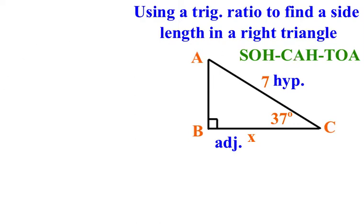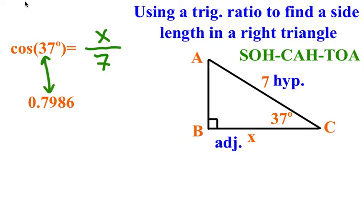It would still be a similar setup, except we'd be using the cosine of 37 degrees, and that would equal the adjacent side, which is now our X, over the hypotenuse, which is our 7. Similar process. Is the cosine of 37 something we can figure out? Yes. We type that in our calculator, we're going to get 0.7986. That's what the cosine of 37 equals. So this cosine of 37 is that. And then it still equals X over 7.